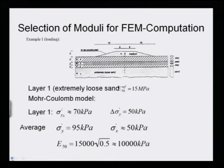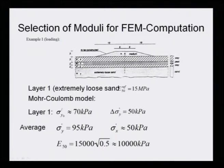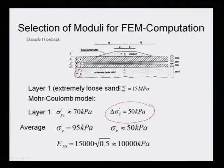Case 1 is loading — how to find the moduli for finite element method computation, particularly for an embankment to be constructed. The soil layer is given as clay, peat clay, and sand. For extremely loose sand, consolidation has been done based on correlation. First you find out sigma_y, the overburden pressure at the middle, and what is your increase in stress delta_y.